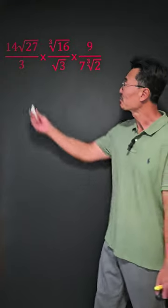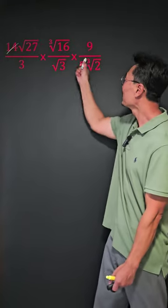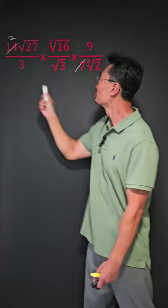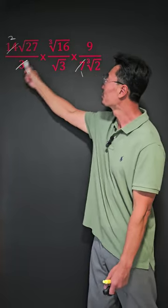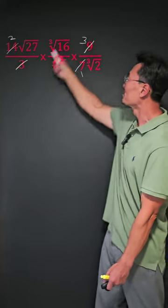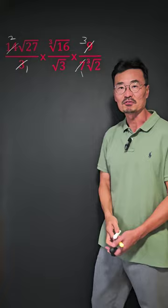First, we'll reduce by canceling the 14 and the 7, making this a 2 and the 1, and also the 3 and the 9, where this becomes a 3 and that becomes a 1.